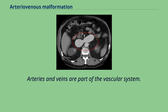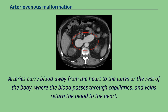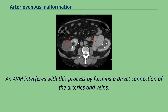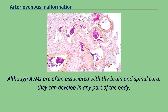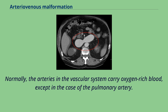Arteries and veins are part of the vascular system. Arteries carry blood away from the heart to the lungs or the rest of the body, where the blood passes through capillaries, and veins return the blood to the heart. An AVM interferes with this process by forming a direct connection of the arteries and veins. AVMs can cause intense pain and lead to serious medical problems. Although AVMs are often associated with the brain and spinal cord, they can develop in any part of the body. Normally, the arteries in the vascular system carry oxygen-rich blood, except in the case of the pulmonary artery.